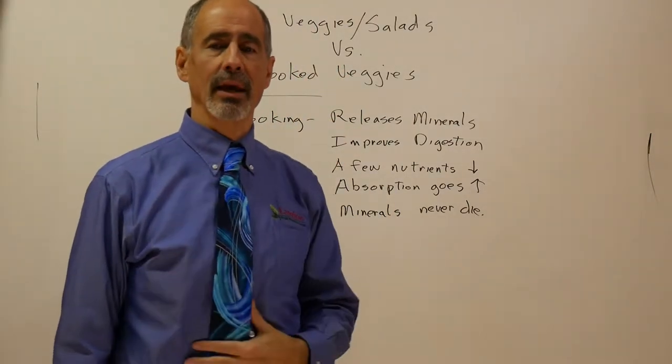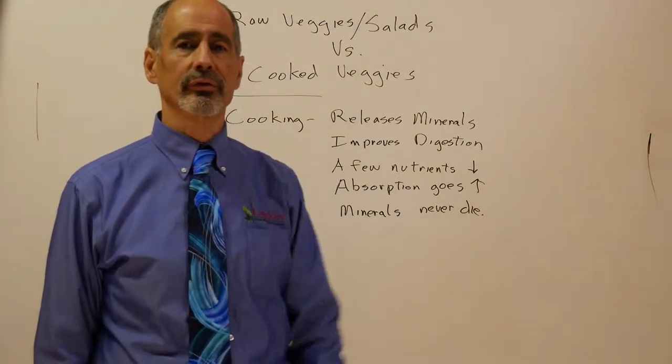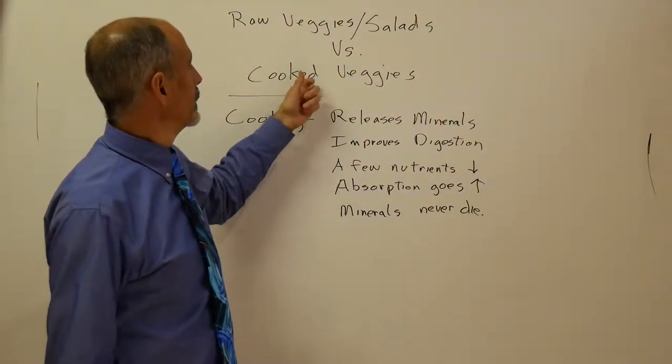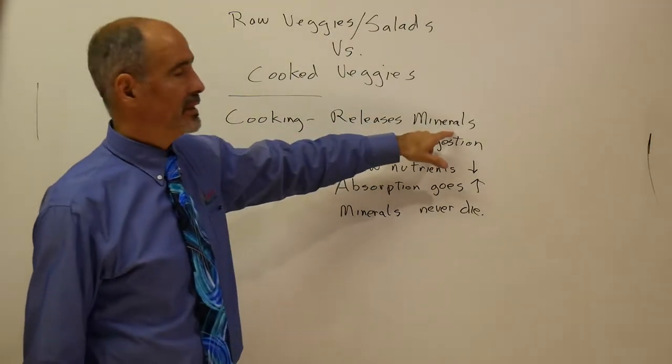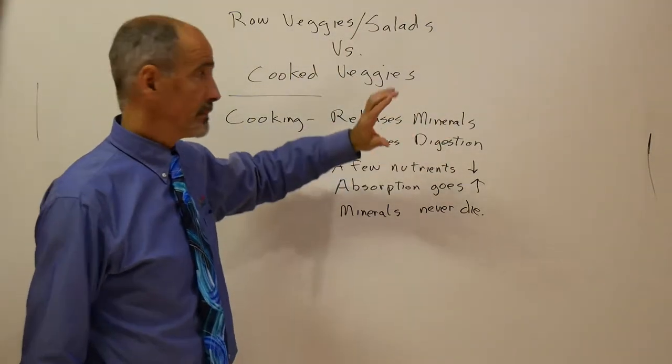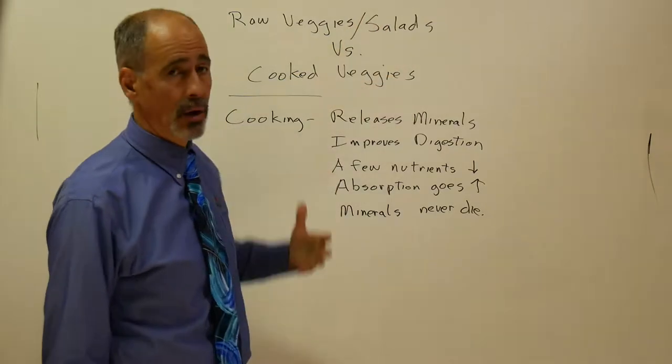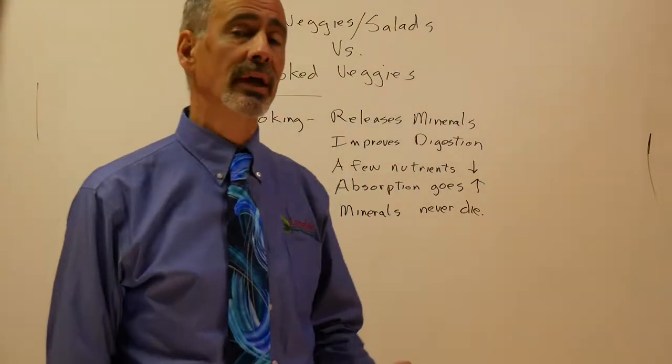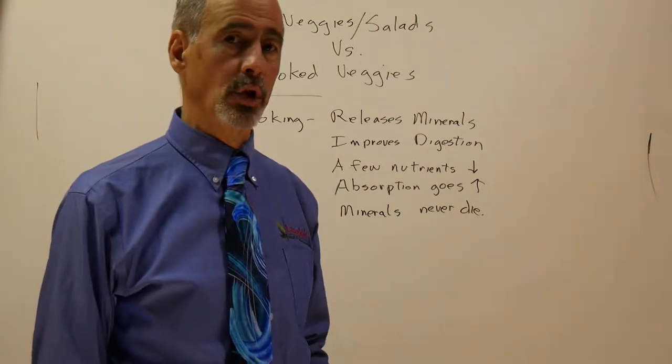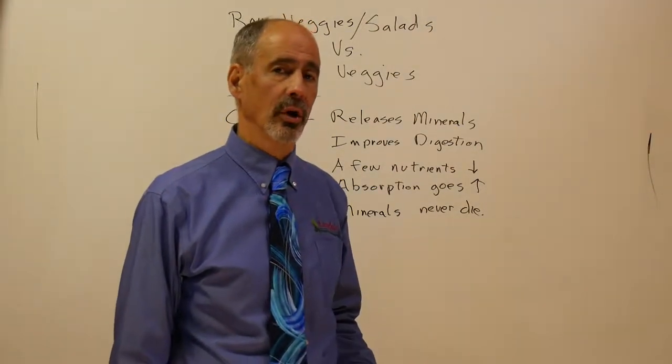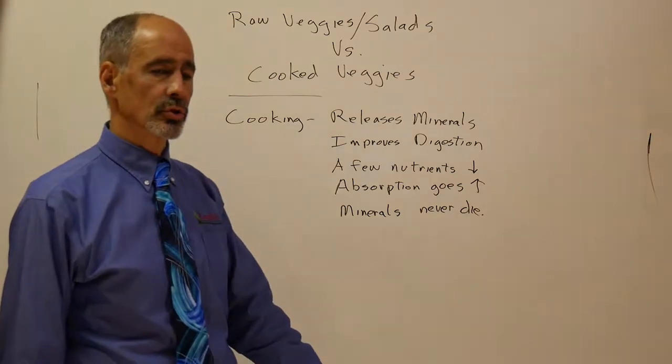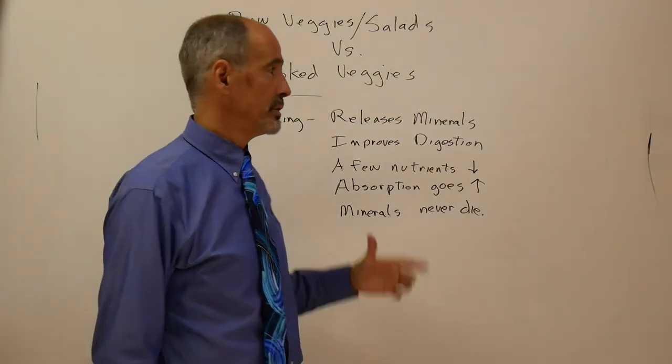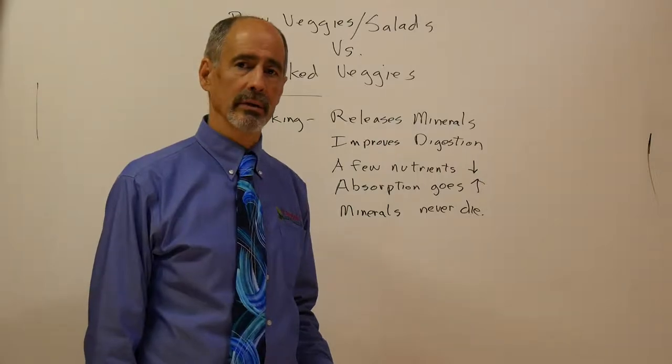When you cook your vegetables, you actually release the minerals. In order to get the minerals out of a raw vegetable takes a lot of work. Cows have four stomachs. They chew their food all day long to get the minerals out. So the cow's job is to chew the grass all day long to try to get the minerals out of it. We don't have the same kind of stomach.